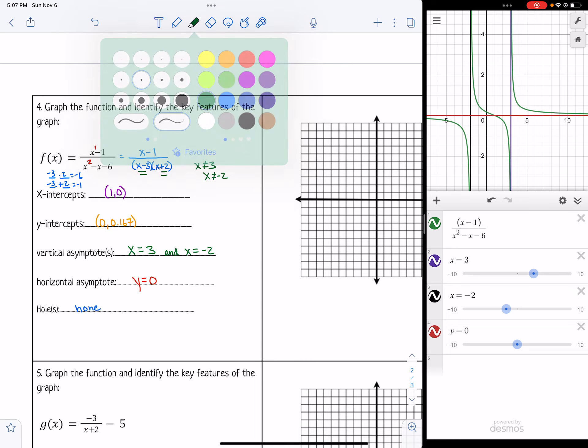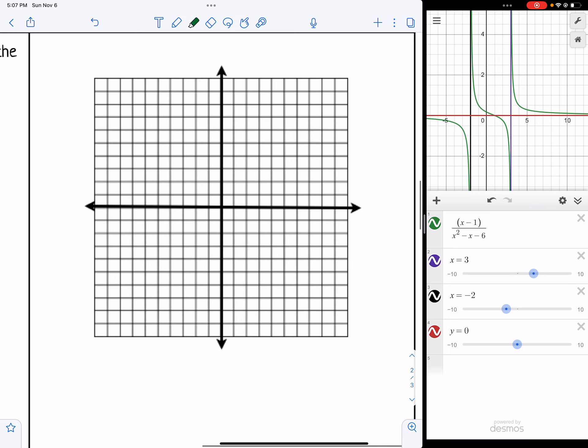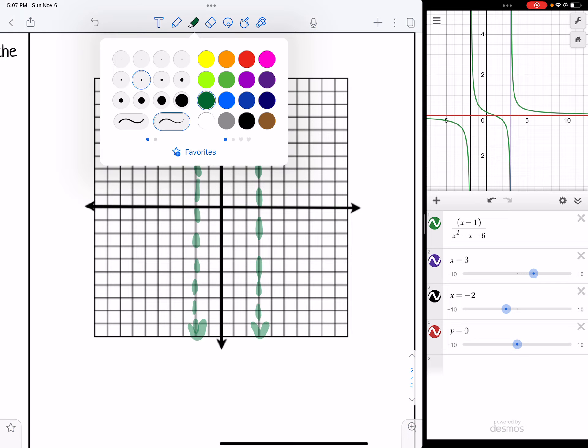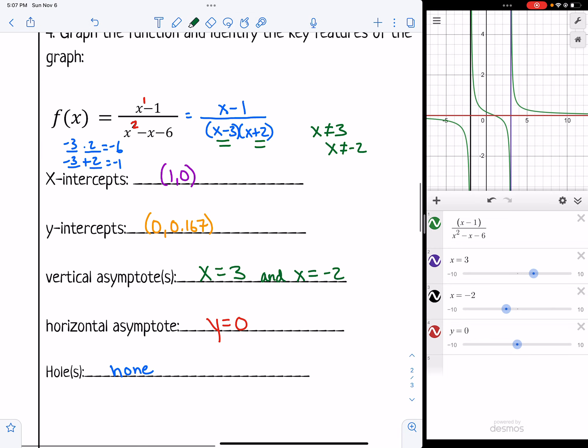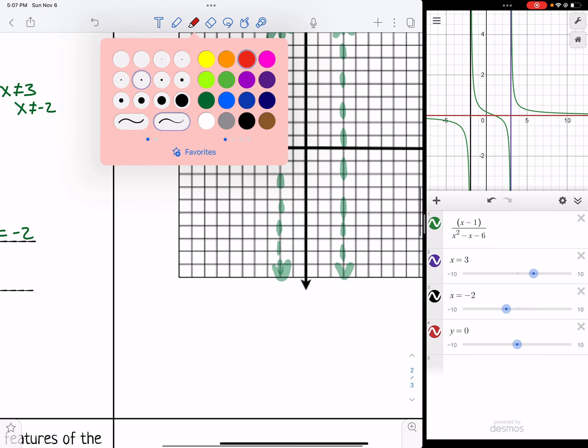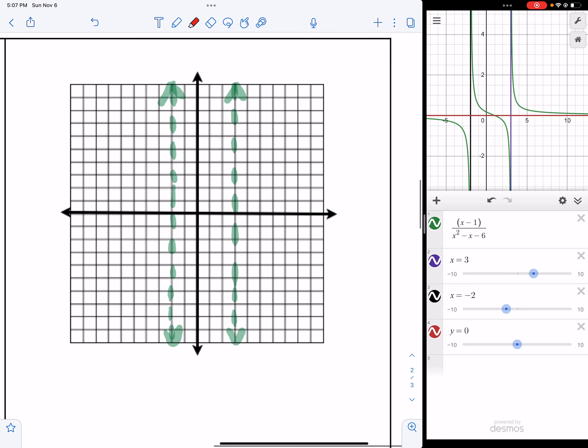So let's sketch everything. I've got vertical asymptotes at 3 and negative 2. So at 3, I draw an imaginary vertical line. And at negative 2, I need to do the same thing. And then I had a horizontal asymptote at y equals 0, which is just the x axis.